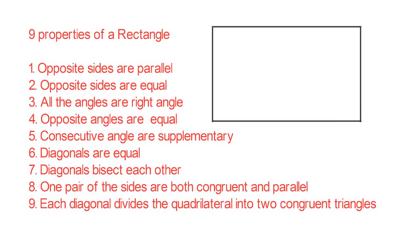opposite sides are equal. Three: all the angles are right angles. Four: opposite angles are equal. Five: consecutive angles are supplementary. Six: diagonals are equal. Seven: diagonals bisect each other — the word bisect means it divides into equal halves. Eight: one pair of the sides are both congruent and parallel — congruent means equal. Nine: each diagonal divides the quadrilateral into two congruent triangles, meaning two equal triangles.